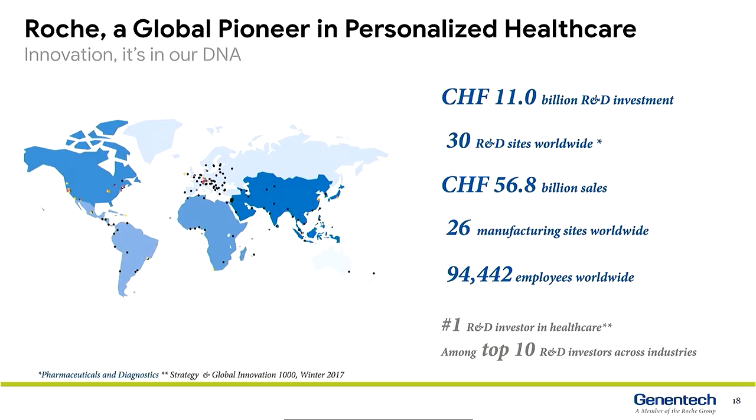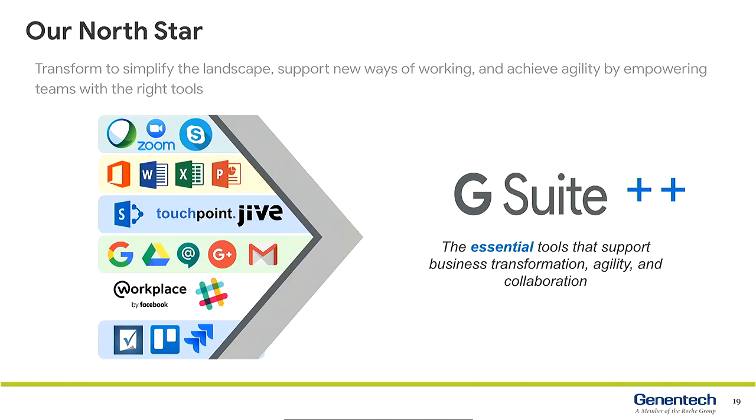Roche invests 11 billion Swiss francs in R&D and is focused on four therapeutic areas: oncology, immunology, neuroscience, and infectious diseases. We have both diagnostics and pharma divisions under one roof, giving us the unique opportunity to look at patient healthcare across the whole spectrum — from prevention, diagnosis, treatment, and monitoring. Our mission is to find the best solutions to improve our patients' lives. From an IT perspective, we're looking at how we can simplify the landscape, empower teams with the right tools, and support new ways of working as our business goes through a major transformation.